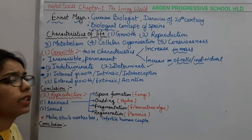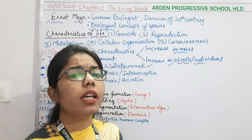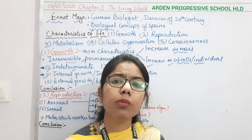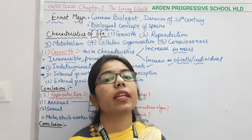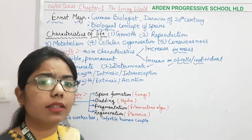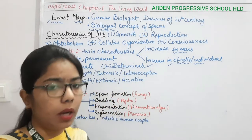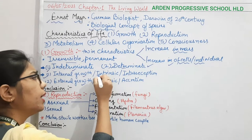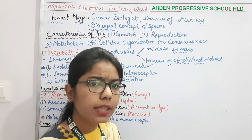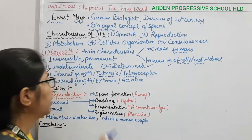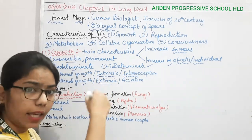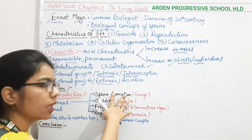Another classification is internal growth and external growth. Internal growth means cells inside the body keep dividing, increasing in number. Internal growth is also known as intrinsic growth or interception. External growth takes place at the outermost part of the body and is called extrinsic growth or accretion.